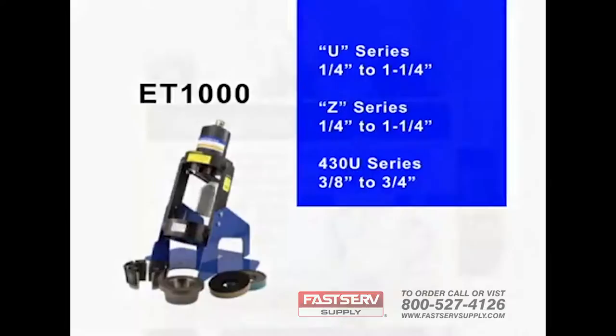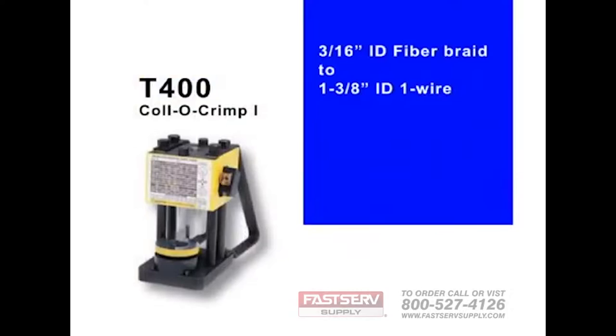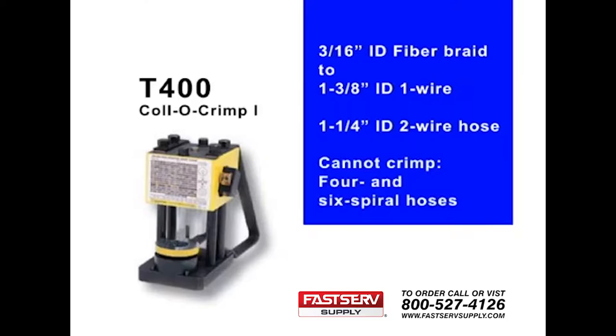The T400 ColoCrimp 1 offers crimping capabilities ranging from 3/16 inch I.D. fiber braid through 1 and 3 eighths inch I.D. 1 wire hose and 1 and 1 quarter inch I.D. 2 wire hose. The T400 cannot crimp 4 and 6 spiral hoses.